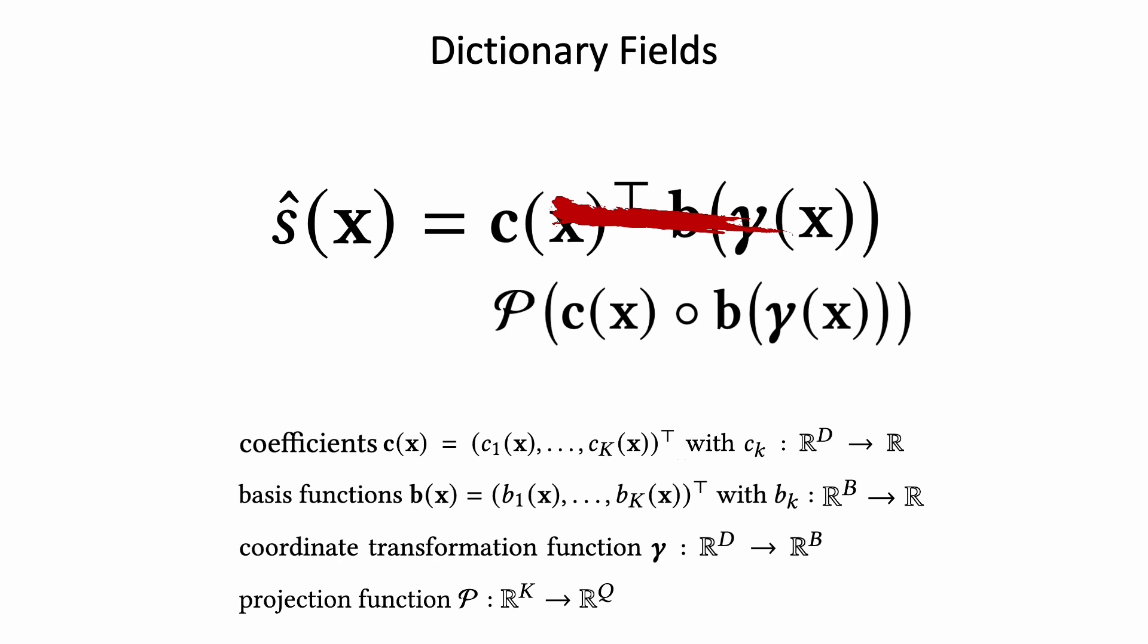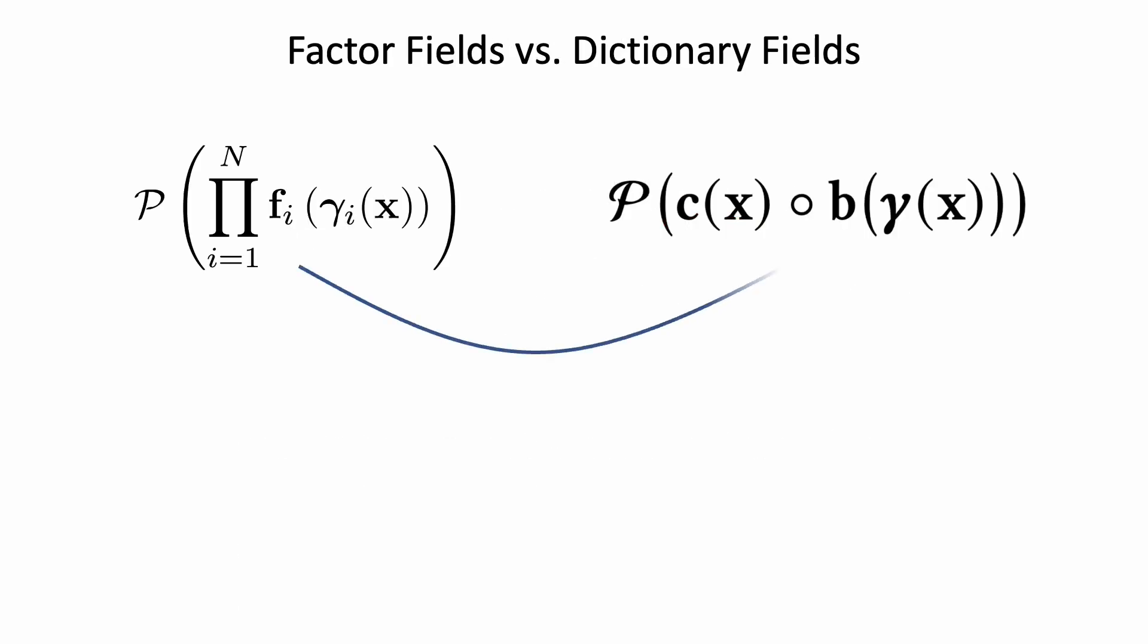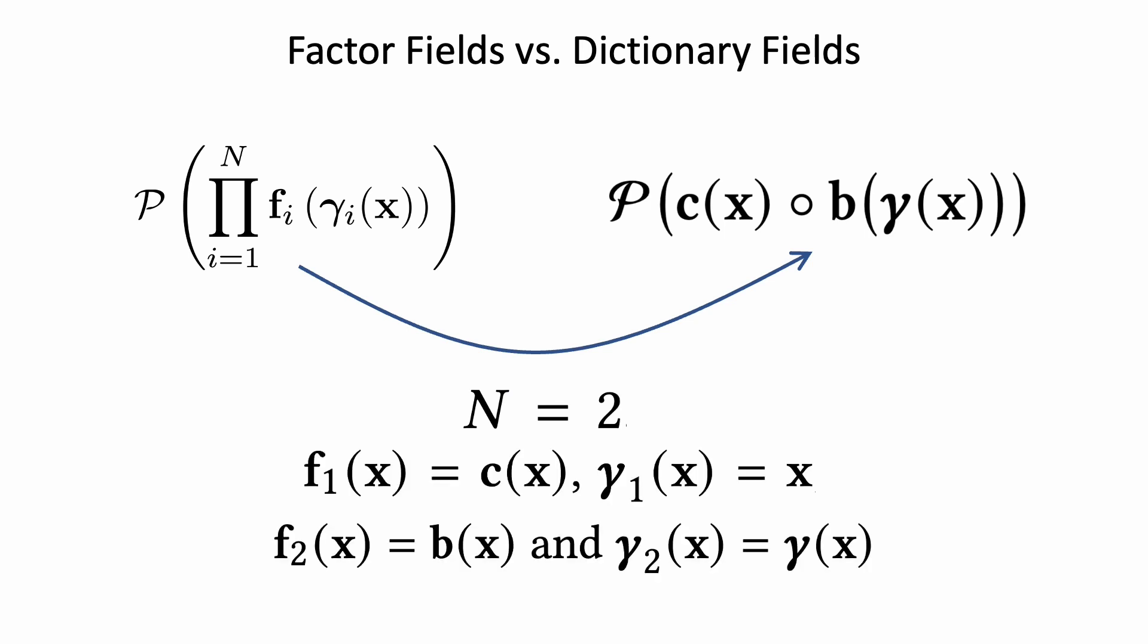And replacing the inner product with the element-wise Hadamard product. We obtain the dictionary field as a special case of our Factor Fields framework by setting n = 2, field representation as coefficient field and basis field. We use an identical coordinate transformation function for the coefficient and a sawtooth function for the basis.